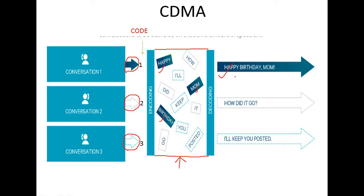At the receiver side, all data is decoded using the respective codes. Data with code 1 is gathered and delivered, data with code 2 is gathered and delivered, and data with code 3 is gathered and delivered. So in a single channel, every conversation can be simultaneously transmitted, and the decoder at the receiver side separates each conversation.